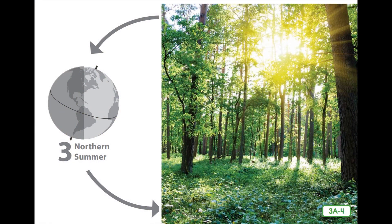The northern hemisphere receives more intense sunlight from the sun at a more direct angle in the summer. Temperatures are usually at their highest during these months. With the increase of light and heat in the summer, plants grow big and strong, and young animals are born and grow strong during this fruitful time as well.